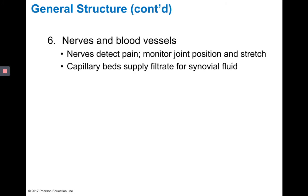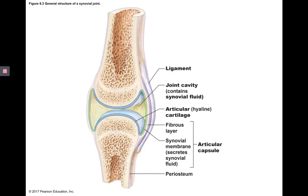Nerves and blood vessels mean that at joints you can detect pain, monitor joint position, and stretch. The capillary beds supply the filtrate for the synovial fluid. Capillary beds also means joints are generally vascularized, though depending on position you may get less or more blood flow to that area. In the diagram, the joint cavity is filled with synovial fluid, surrounded by the articular capsule with inner synovial membrane and outer fibrous layer, with articular cartilage at the bone ends continuous with the periosteum, and ligaments surrounding the capsule.